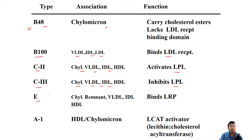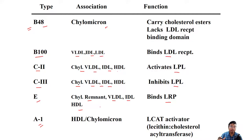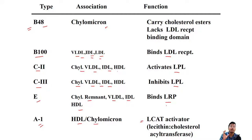ApoE is found in chylomicron remnant, VLDL, IDL, and HDL — LDL does not contain ApoE. LDL receptor-related protein (LRP) identifies ApoE as a ligand. ApoA1 is absent in the major B100-containing lipoproteins: VLDL, IDL, and LDL are excluded. HDL and chylomicron contain ApoA1. ApoA1 activates lecithin cholesterol acyltransferase, that is LCAT. Please remember the whole table for MCQ and VIVA purposes.